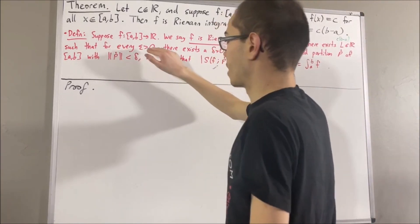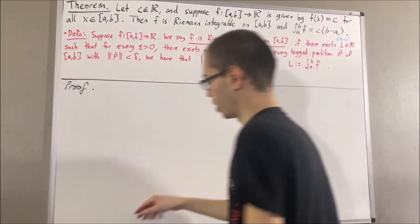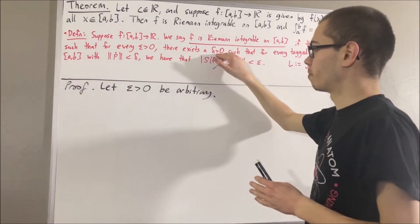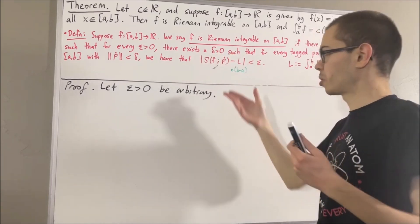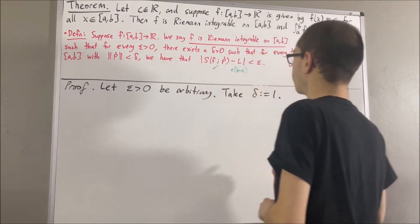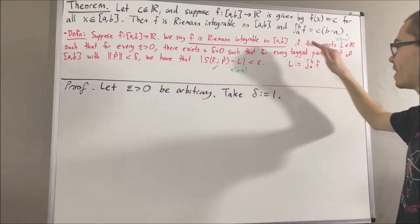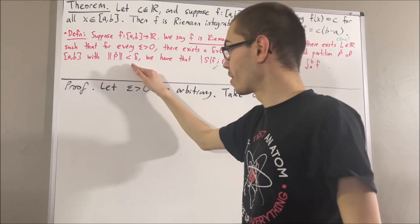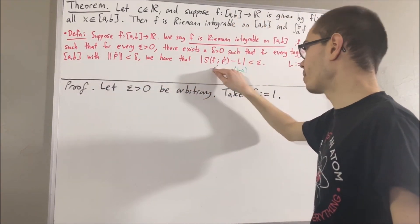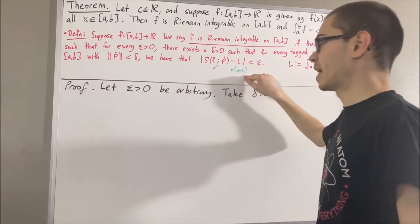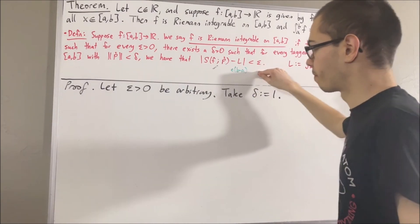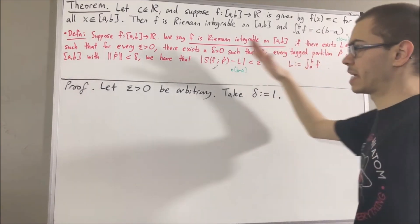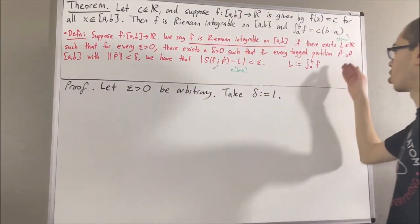Since we're trying to prove a statement about every ε > 0, let's give ourselves an arbitrary ε > 0. It turns out our choice of δ will work for any real number, so let's just take δ = 1. From here, we want to show that for every tagged partition P of [a, b] whose norm is less than δ, we have that the absolute value of the Riemann sum minus c(b − a) is less than ε. So let's give ourselves an arbitrary tagged partition of [a, b] whose norm is less than δ — I'll call it P.